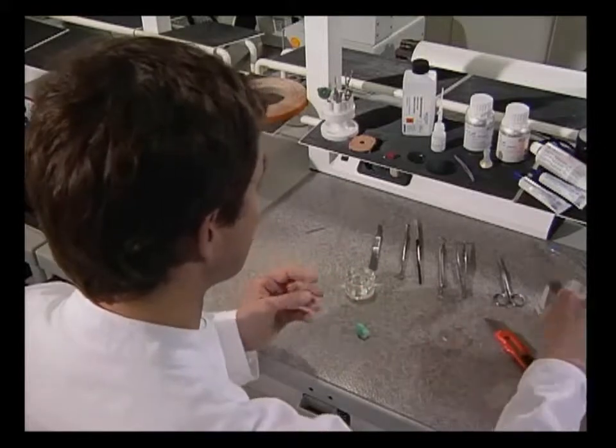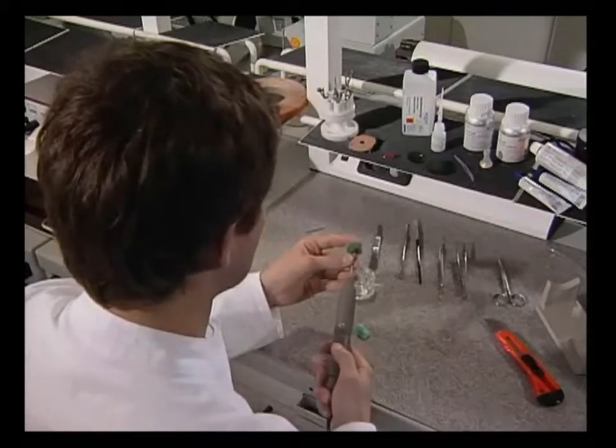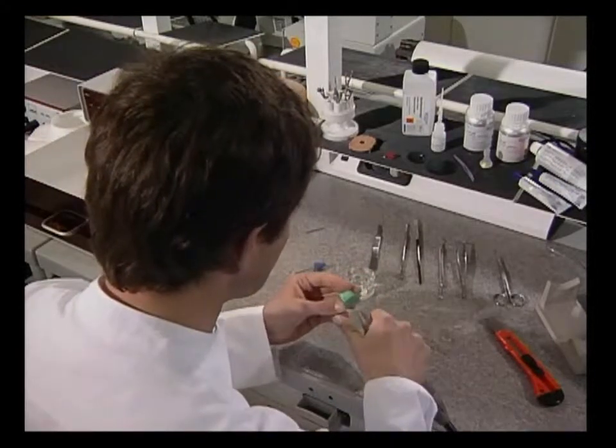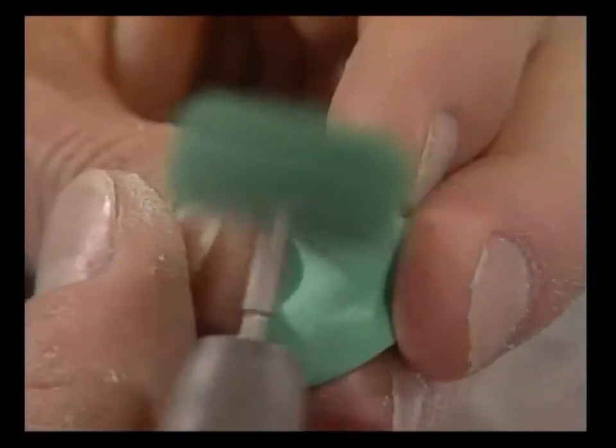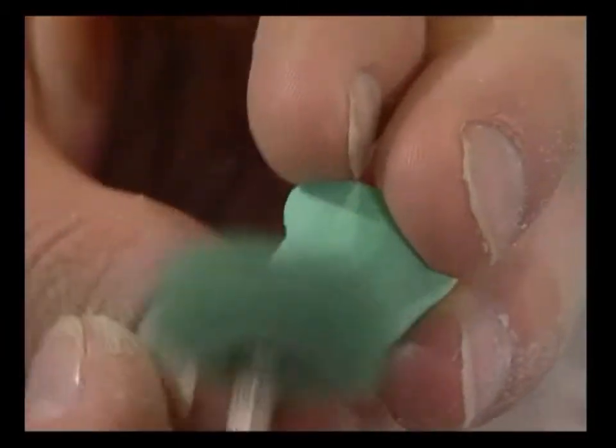The surface of the impression is then reworked with a soft green polishing disc. This is carried out without pressure at a maximum speed of 10,000 RPMs. The surface must not be overly smoothed as this would make the impression too small and the finished plastic would no longer be dense.